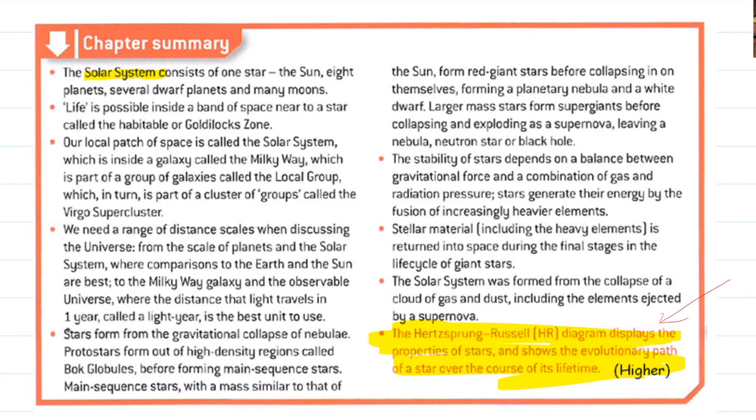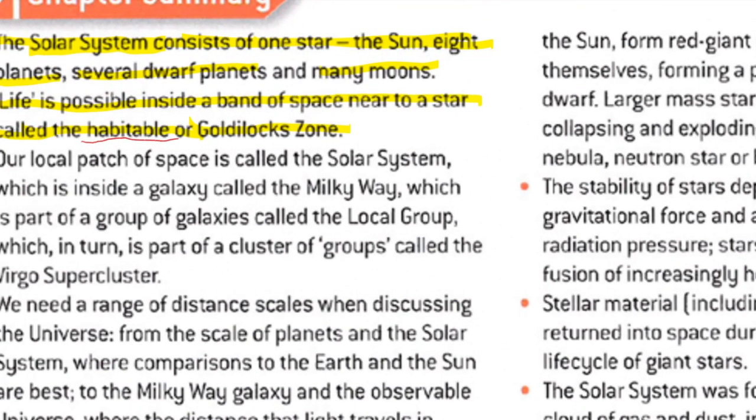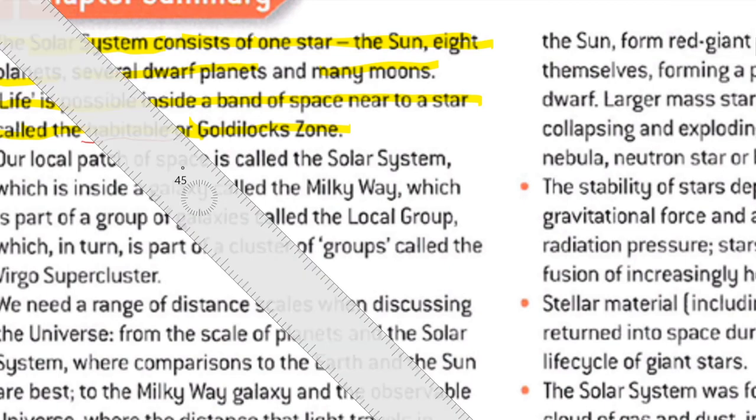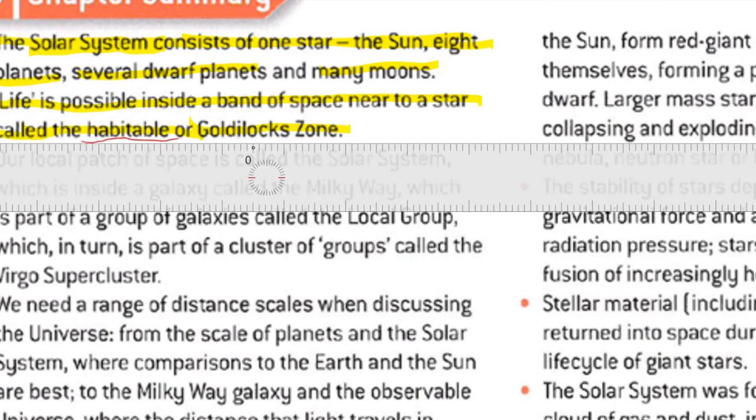If we start at the top here, the solar system consists of one star which we call the sun, eight planets, several dwarf planets and many moons. Life is possible inside a band of space near to a star called the habitable or goldilocks zone. Look at these two words there: habitable means you can live there, and the goldilocks zone.